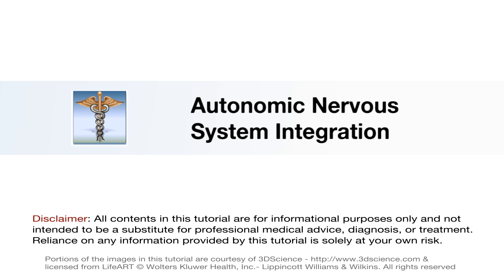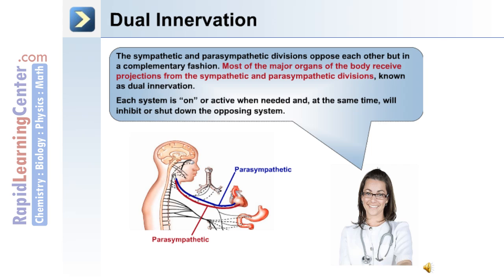The sympathetic and parasympathetic divisions of the autonomic nervous system oppose each other but in a complementary fashion. Most major organs of the body receive projections from both the sympathetic and parasympathetic divisions. This is known as dual innervation. Each system is active when needed and will inhibit or shut down the opposing system.